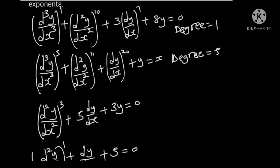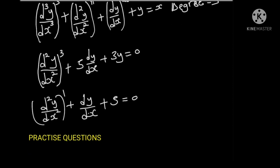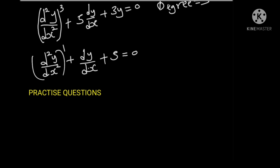In another example, the highest differential coefficient present is d squared y over dx squared, and the power of that is 3, giving us degree 3. And in the last example, the highest differential coefficient is d squared y over dx squared. The power is 1, so the degree is 1.